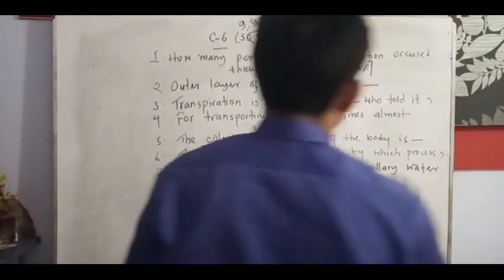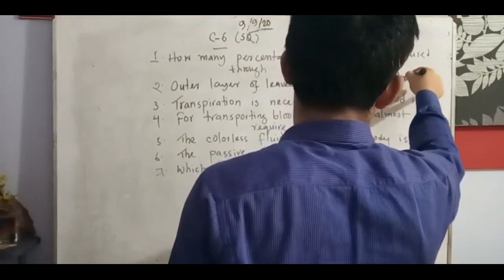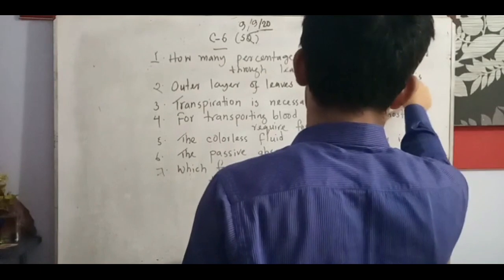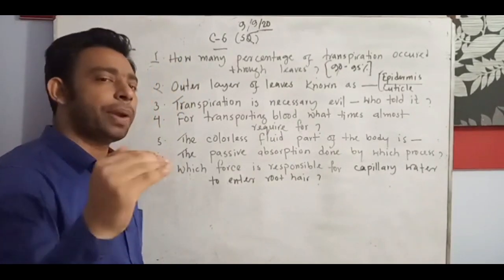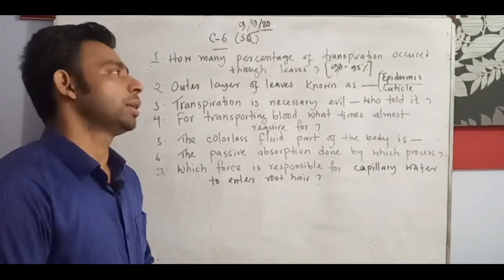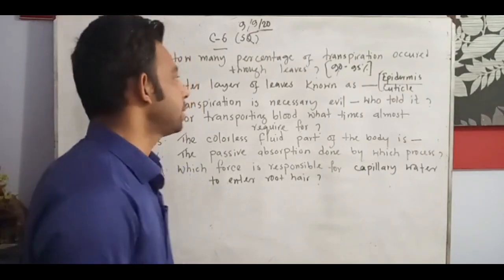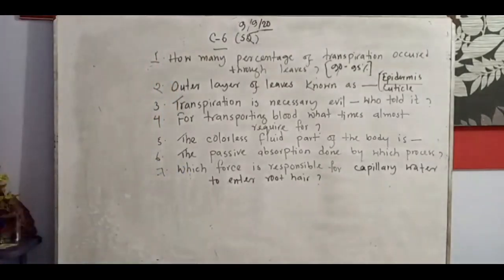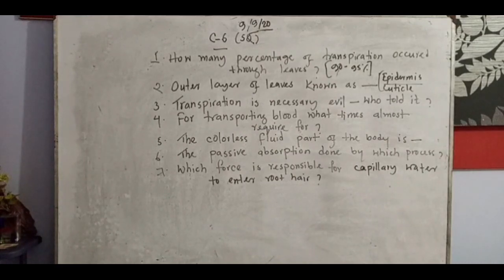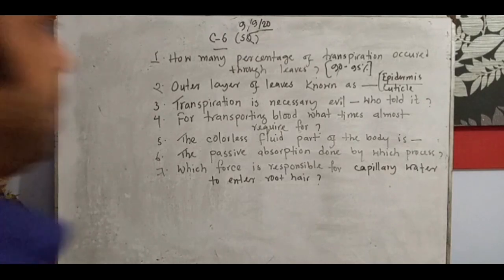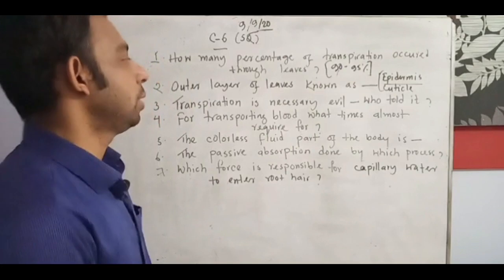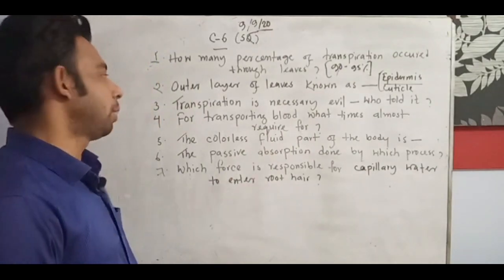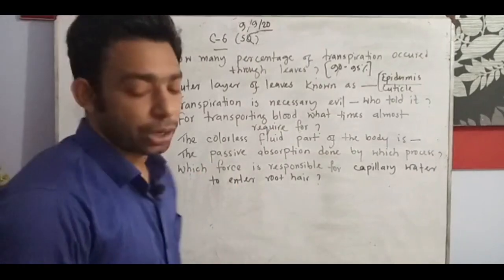For the outer layer of the leaves — someone says epidermis, which is correct. But I say cuticle. Epidermis is the outer layer, and within the epidermis there is another layer. The outer part of the epidermis is known as the cuticle, making the cuticle the very outermost layer of the leaves. Epidermis is also the outer layer of the leaves, and beyond the epidermis there is another thin layer — that is the cuticle.